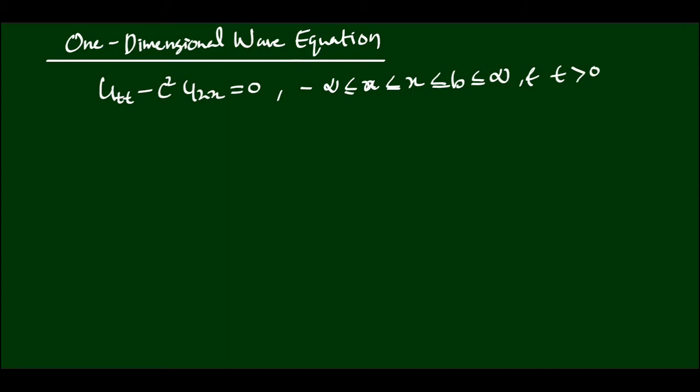That is, C belongs to R minus {0}. Now we try to solve this equation. Observe that equation 1 is a second-order linear partial differential equation. So, to solve this equation, we have to determine the type of this equation. For that, we consider the discriminant of equation 1.